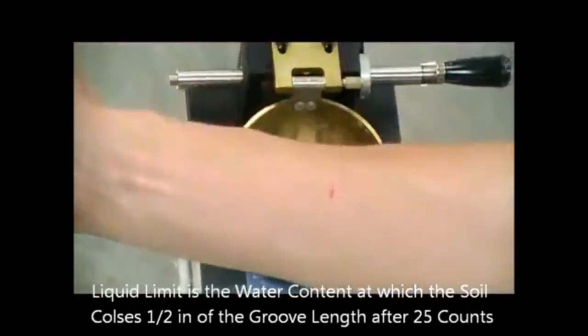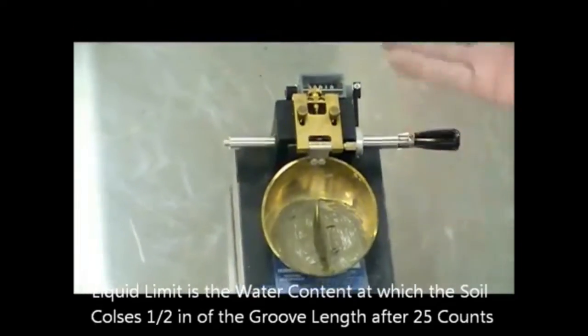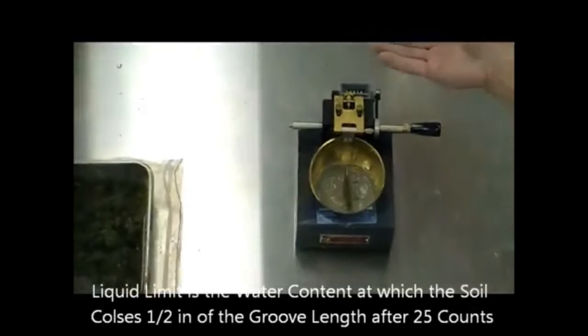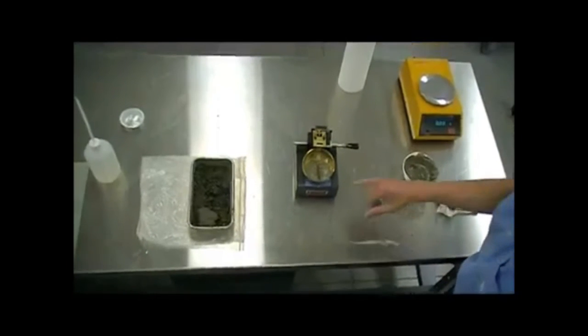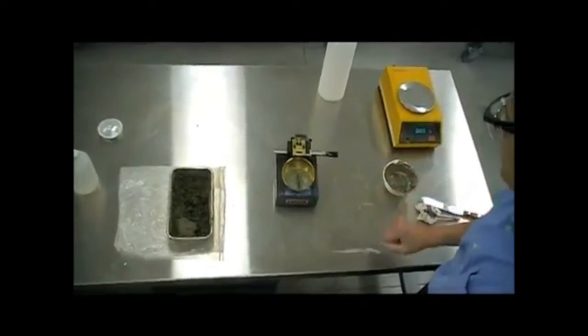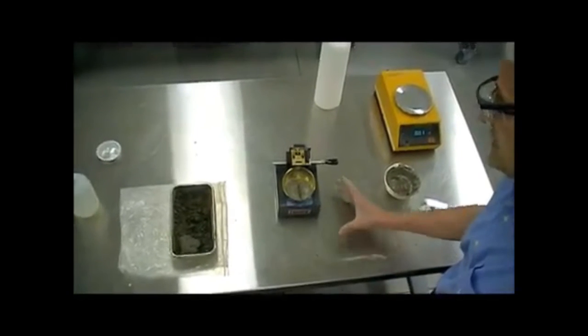Then we're going to use drier material to get somewhere maybe close to 20, another point above 25, and typically you will determine that from the intersection with the line of 25. We're going to show that in a spreadsheet.